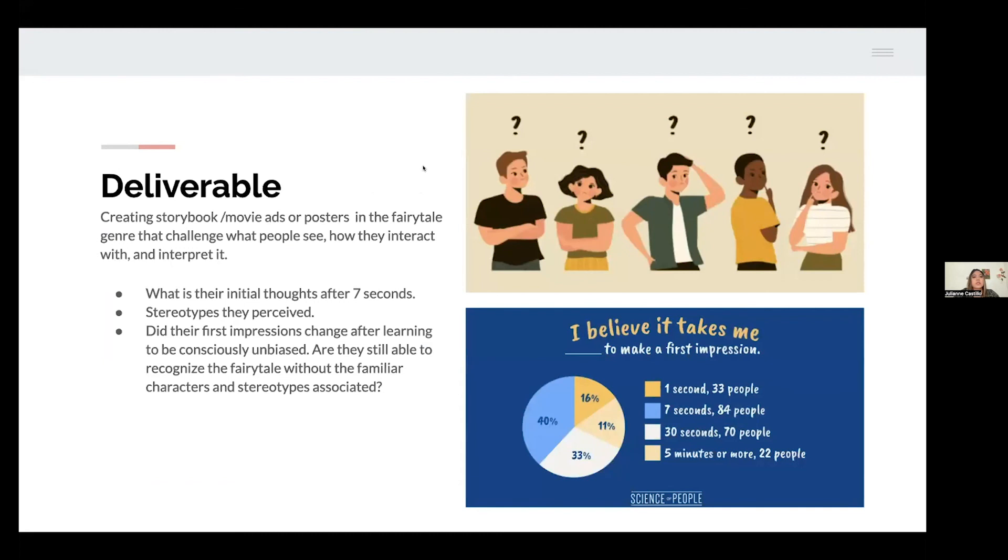In my deliverable, I want to create storybook or movie ads or posters specifically in the fairy tale genre to challenge what people see and how they interact with it and interpret them. I want to know what their initial thoughts are after seven seconds, because it typically takes one-tenth of a second to form an opinion or a bias. I want to see what stereotypes you originally perceive and if their first impressions changed after learning to be consciously unbiased. Are we still able to recognize the fairy tale without familiar characters or stereotypes associated?